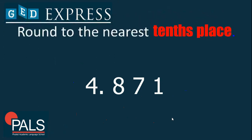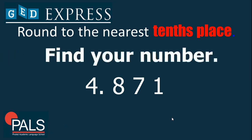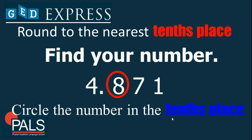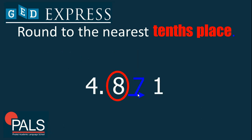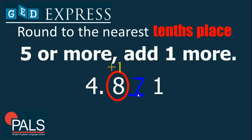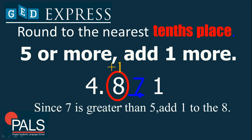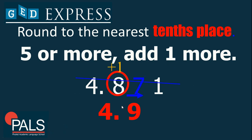Suppose we have 4.871 — read as '4 and 871 thousandths.' We find the number in the tenths place, which is 8. Now 8 is preceded by 7. Following the rule, since 7 is 5 to 9, we add 1: 8 plus 1 becomes 9. So the answer is 4.9. We no longer put zeros here, unlike with whole numbers.